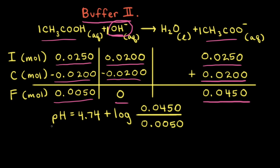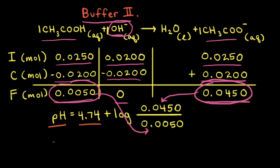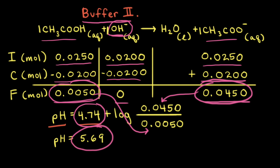Next we calculate the pH of buffer solution 2 using the Henderson-Hasselbalch equation. The pH equals the pKa of acetic acid of 4.74 plus the log of the concentration of the conjugate base divided by the concentration of the weak acid. Substituting in the moles from our ICF table, with 0.0450 moles of acetate and 0.0050 moles of acetic acid, we find the pH of buffer solution 2 is equal to 5.69. So buffer solution 2 started at a pH of 4.74 and after the addition of the hydroxide anions the pH rose to 5.69, which is a relatively large increase.